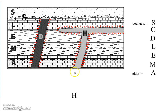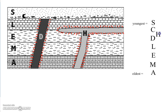Now what about layer H? I see contact on A, M, E, and L, so those four layers were definitely there first. But this intrusion did not reach C and S, so I don't know if H formed before or after C. All I know is H has to be younger than A, M, E, and L because it contacted them. So H could go anywhere after L — it's younger than L but its exact position relative to C and S cannot be determined.